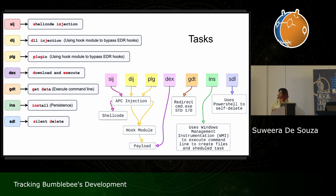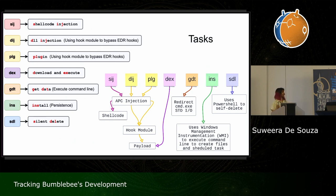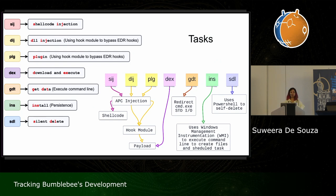Bumblebee also has an option for directly executing the payload through DEX. GDT (get data) allows the malware to run bash commands on the system — instead of directly invoking cmd.exe, they pass those commands to cmd.exe's standard input/output via named pipes, which is actually quite a common programming technique. There's also INS for install, which creates persistence using WMI, and finally SDL (silent delete), which uses PowerShell to delete itself.